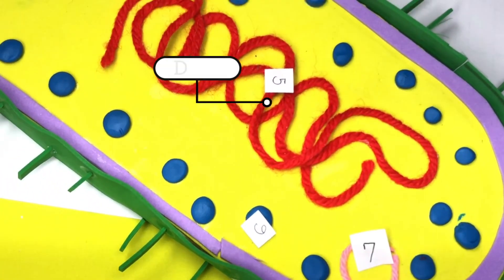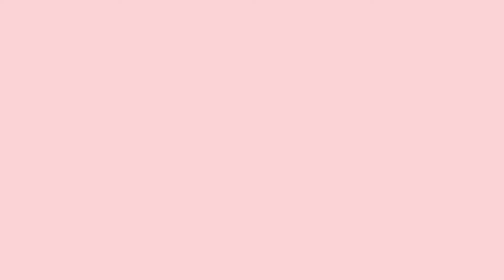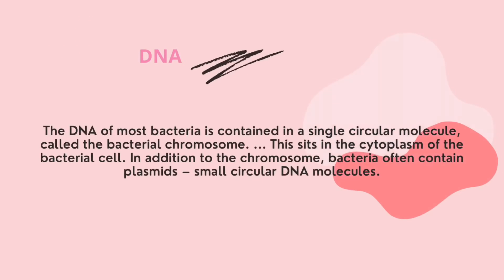Lastly, the DNA. The DNA of most bacteria is contained in a single circular molecule called the bacterial chromosome. This sits in the cytoplasm of the bacteria cell. In addition to the chromosome, bacteria often contain plasmids — small circular DNA molecules.